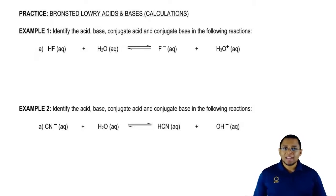Remember, what does a Bronsted-Lowry acid do? It gives away H plus. A Bronsted-Lowry base, on the other hand, will accept that H plus.